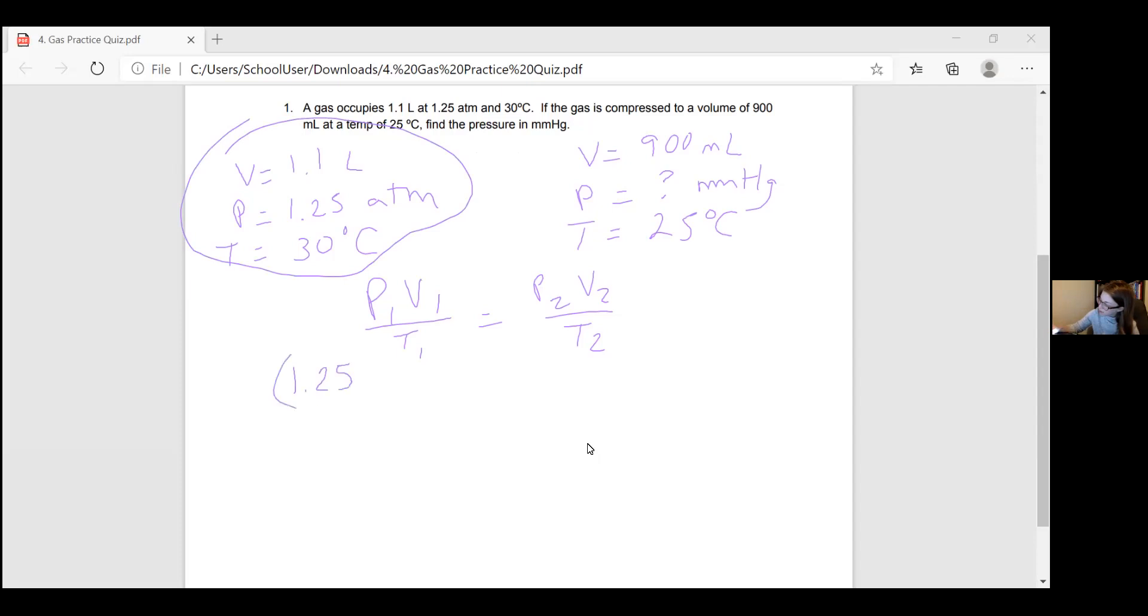So my pressure is 1.25 atm. My volume is 1.1 liters. My temperature, actually, I do have to add 273 to, because it has to be in Kelvin.